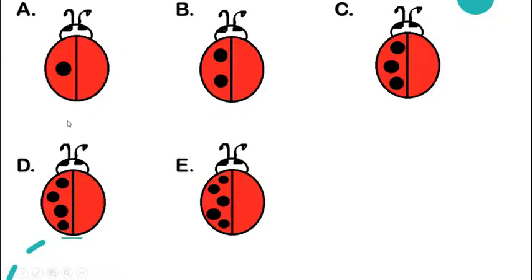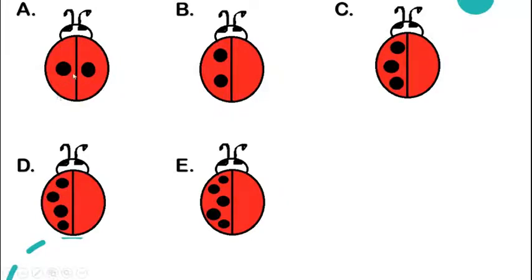Let's start with letter A. As you can see, we have a ladybug. How many spots do you see on the left wing? Very good — only one. So we need to draw one spot also on the other wing. We're done drawing one spot, so we'll count how many spots in all on both wings: one, two. There are two spots. If we write this as an addition sentence side by side: one plus one is equal to two.